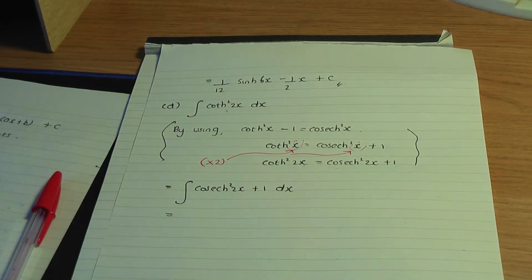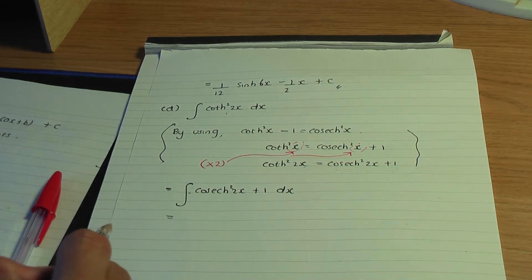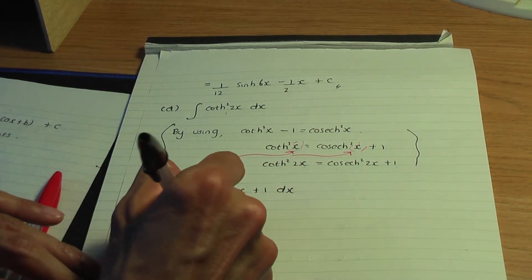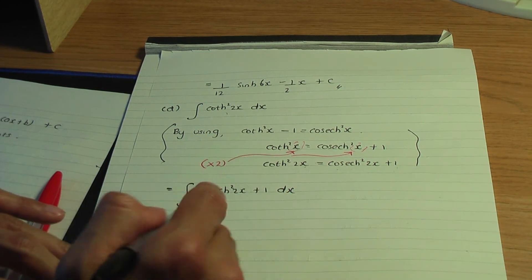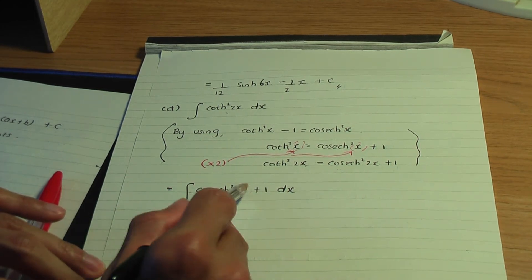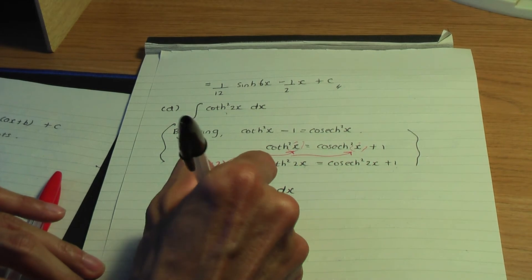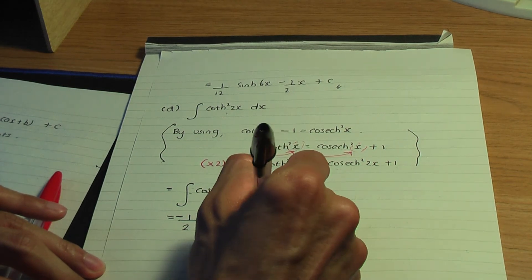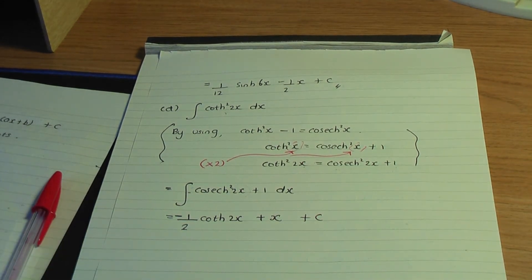The term in front is 1 — so k equals 1 — and 2x is linear, so it's k over coefficient of x: 1 divided by 2. Integrating cosh gives sinh 2x, and integrating 1 gives x, so the solution is one-half hyperbolic sinh 2x plus x plus c. That is the solution to that integral.